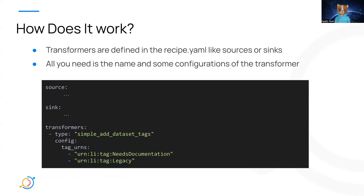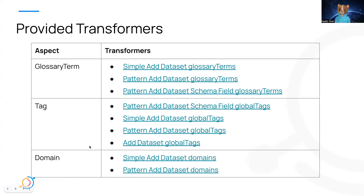So how does it work? How do we configure the transformer? Transformers are defined in the recipe.yaml file, just like sources and sinks. All you need to do is define the transformer name and some configs along with it.